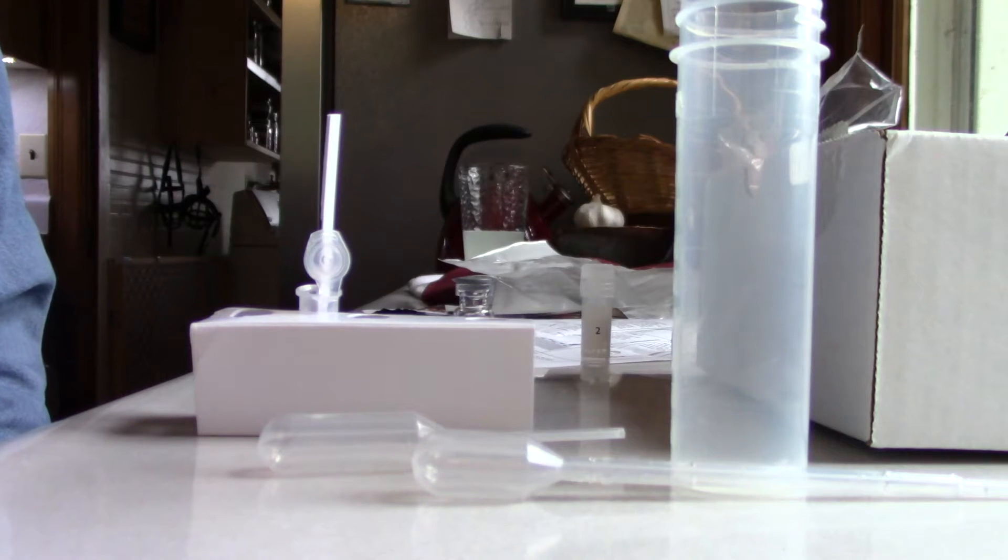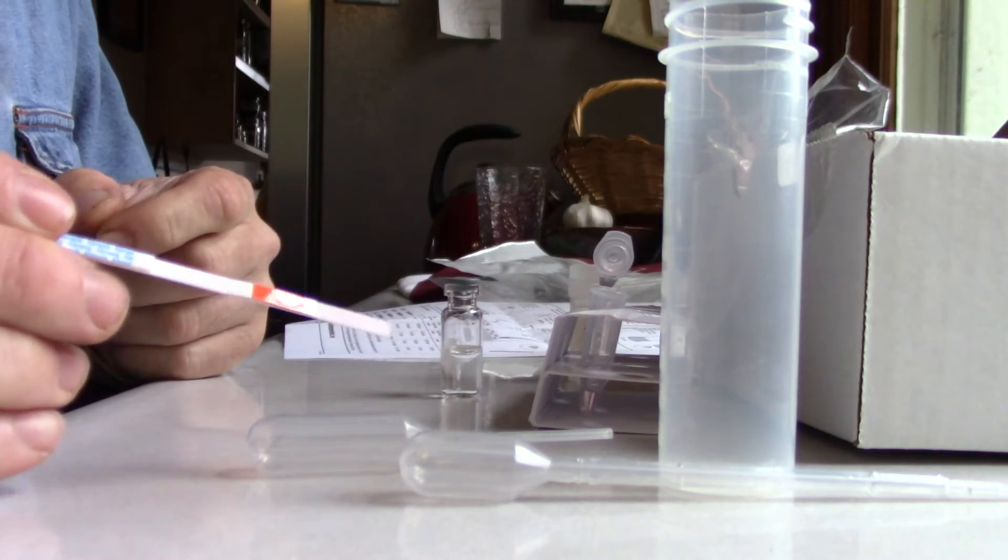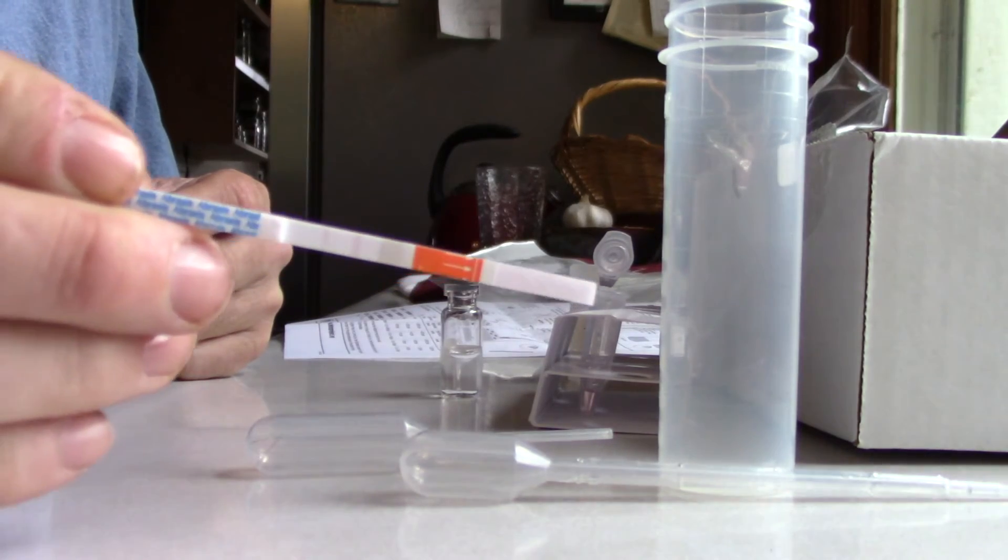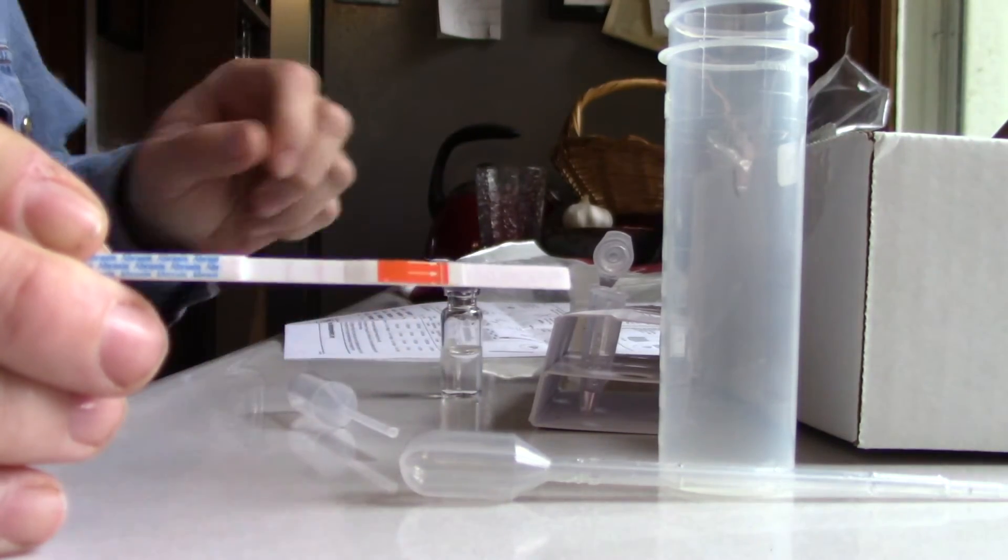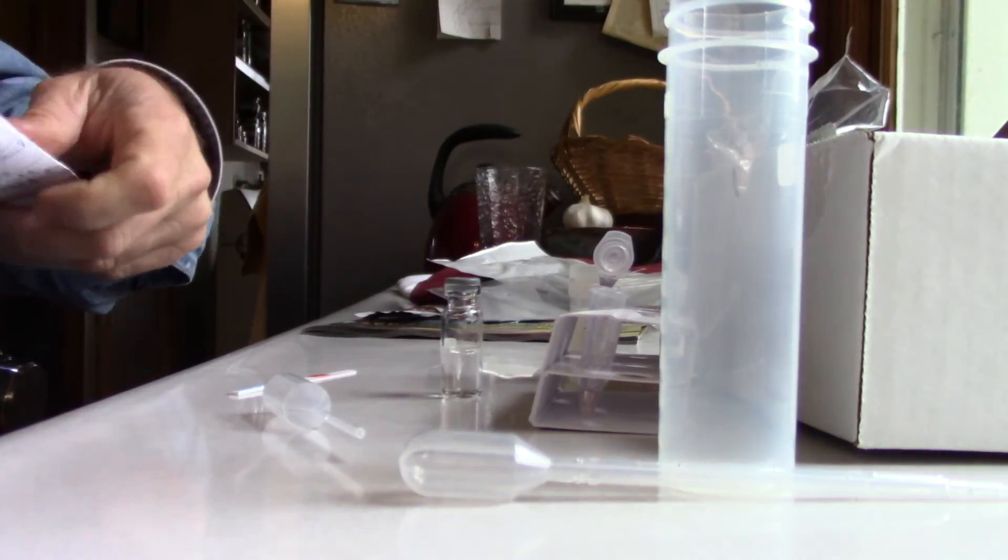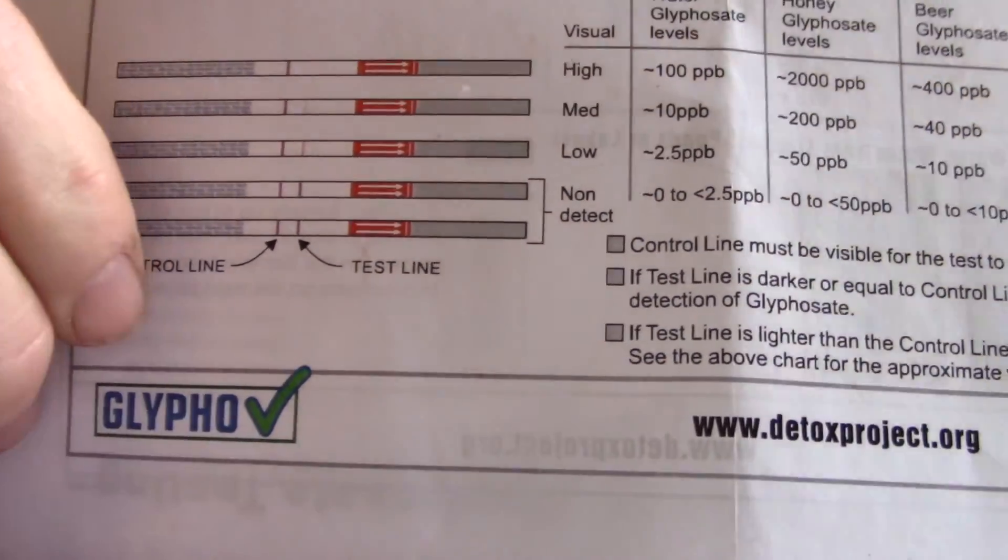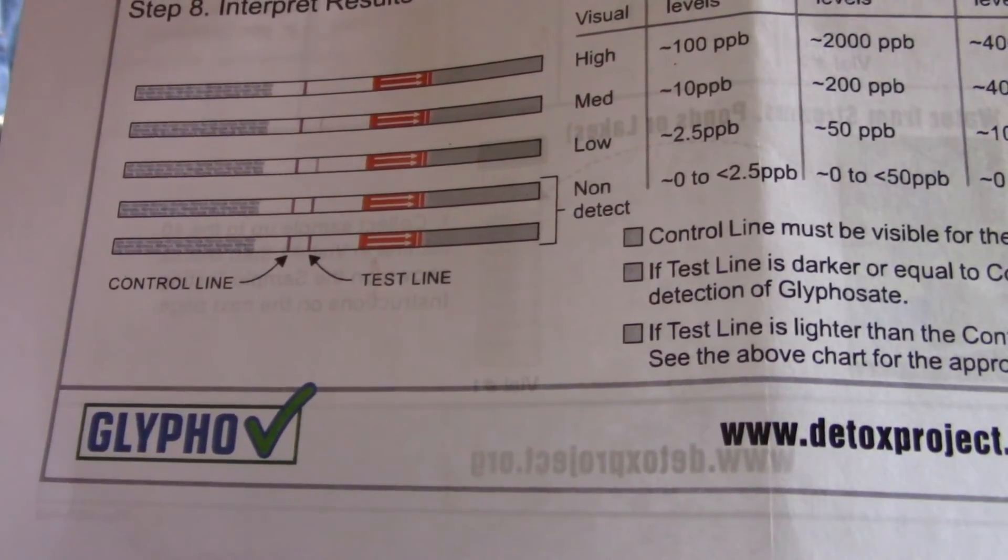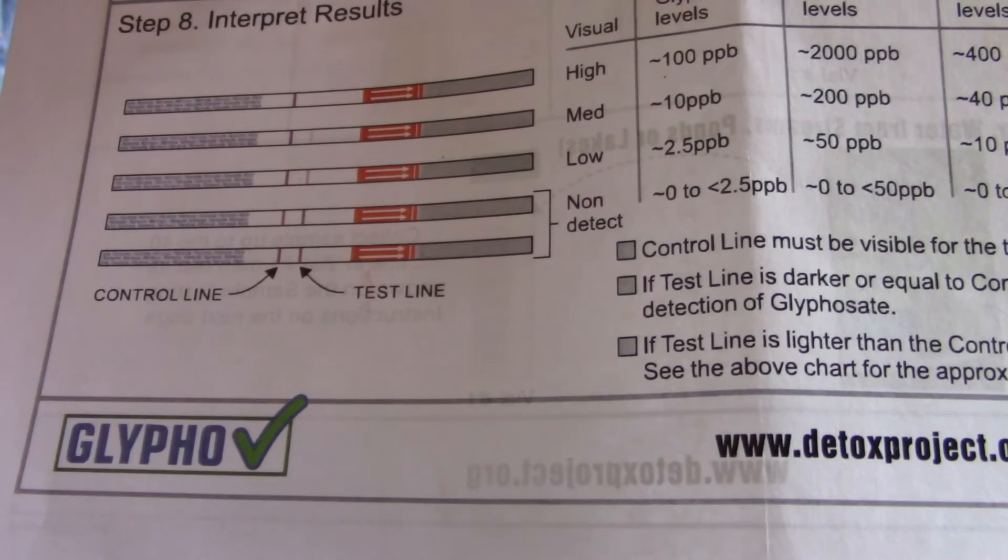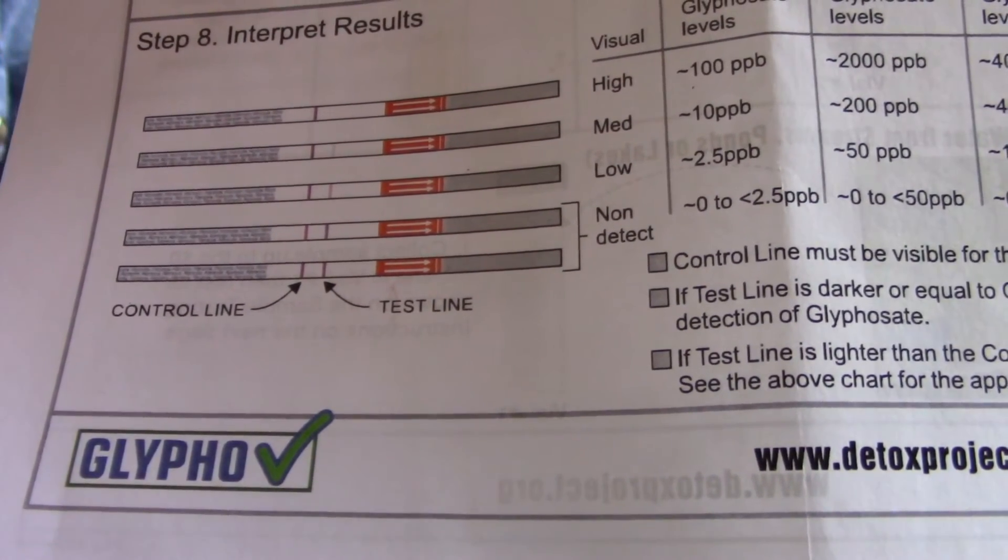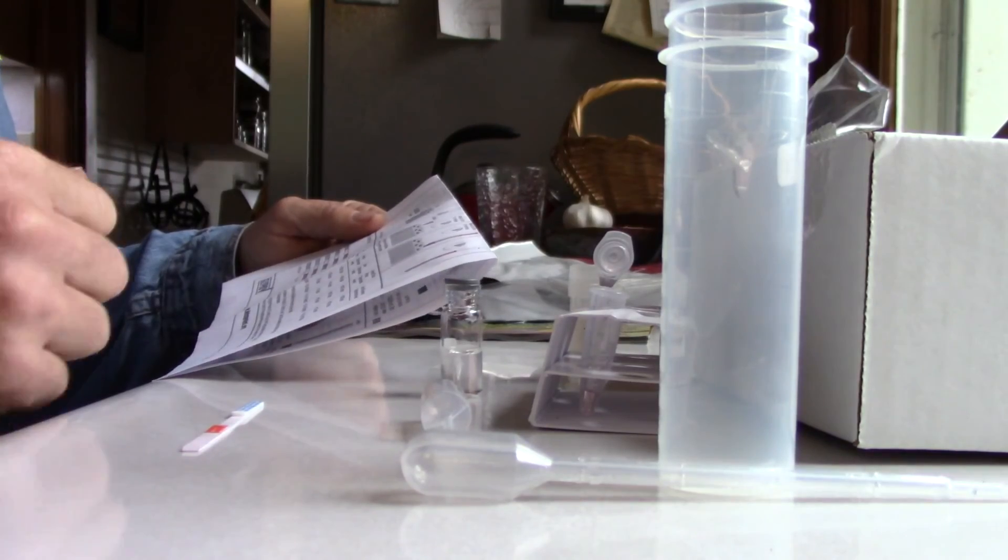Okay, I've got the test results here and good news. I don't know if you can see those two lines right there. Anyway, it says if they're the same color, if one line isn't darker than the other line, then non-detect. So no glyphosate in our water. Woohoo! Water, we're okay, yeah.